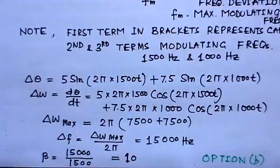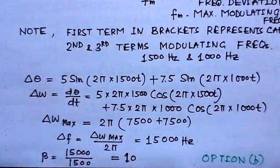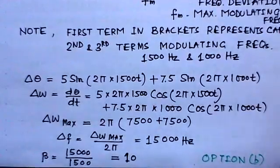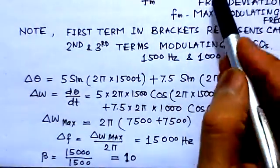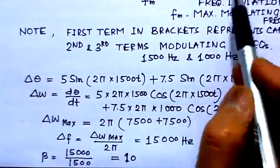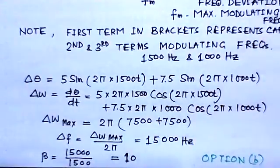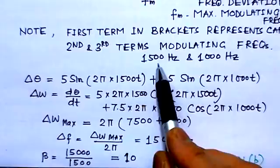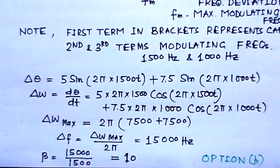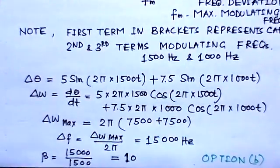Once we know the maximum frequency deviation, we can find beta. Beta is maximum frequency deviation over the modulating frequency. The modulating frequencies consist of two parts: 1500 Hz and 1000 Hz. While finding beta, we take the maximum modulating frequency, which is 1500 Hz. So beta = 1500 / 1500 = 10, corresponding to option B.